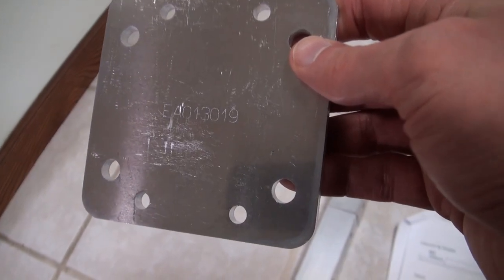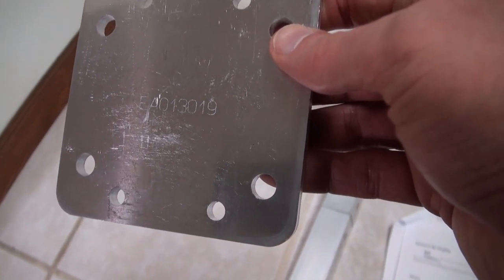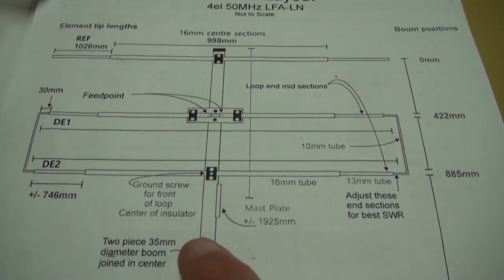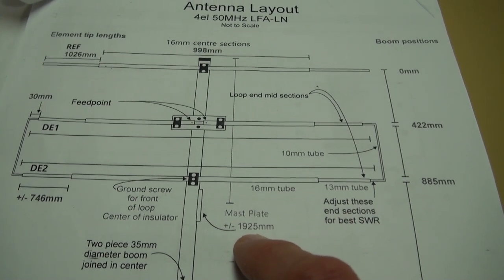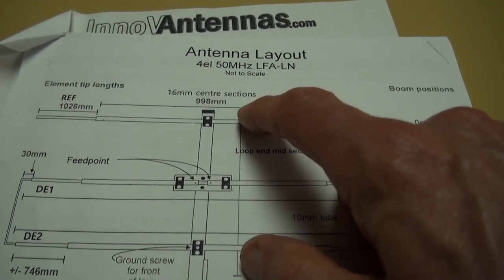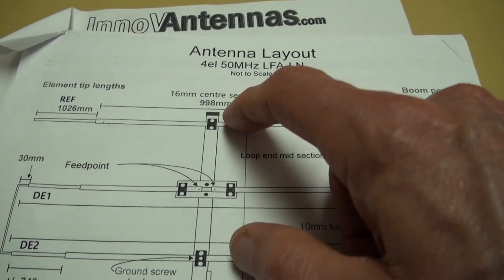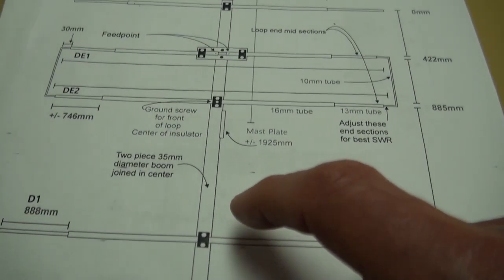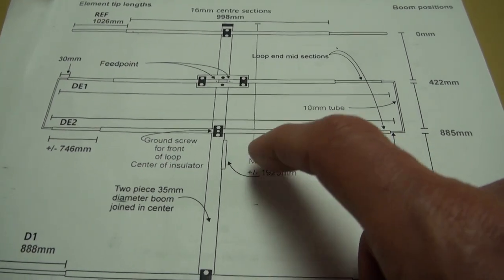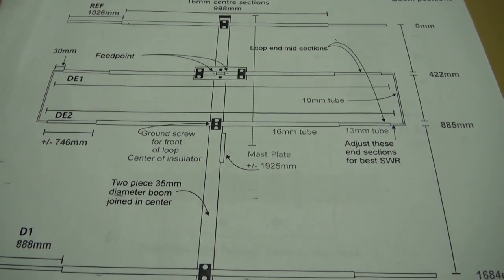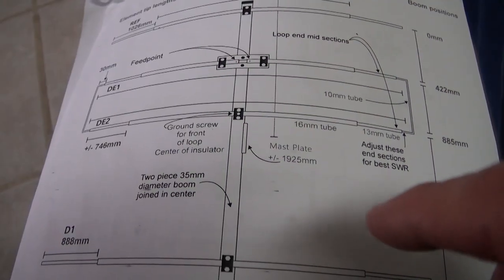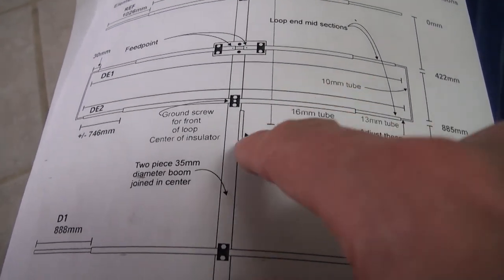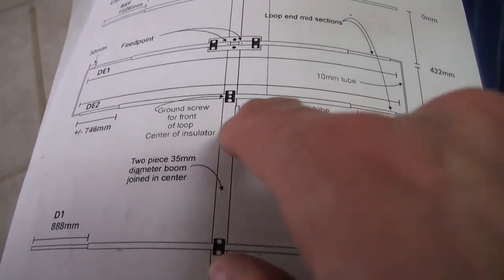We'll now talk about the mast plate, which is part number EA013019. Based on the assembly manual, they want the mast plate located at 1925 millimeters from the end of the reflector here, or the very end of the boom. The boom is 11 feet long in imperial measurements, so what I did was split it in half and put the mast plate at 5 feet 6 inches. The assembly guide shows the mast plate on the right side of the boom. Probably doesn't matter. You could probably put it on either side.